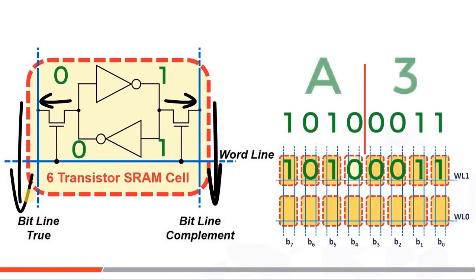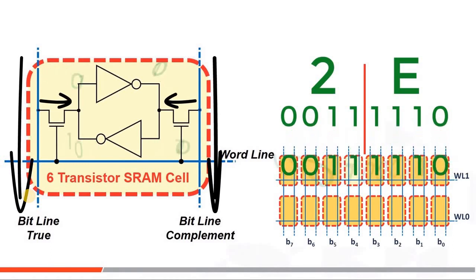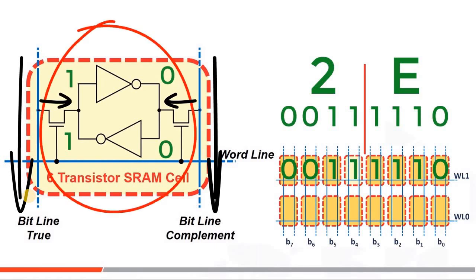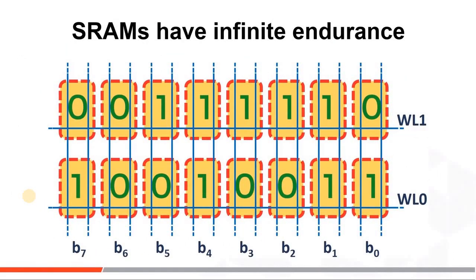Now you write 2E hex, and again the stronger bit line drivers flip the SRAM bits, changing the content from A3 hex to 2E hex. These two feedback inverters now capture and hold your new 2E hex value. In SRAMs, these bits can be read over and over or written over and over infinitely without damage to the structure and without losing content.